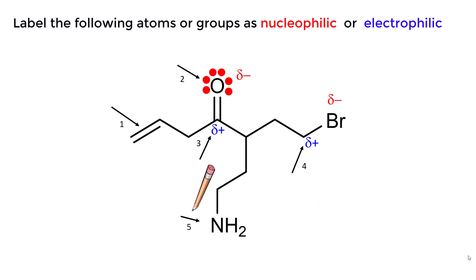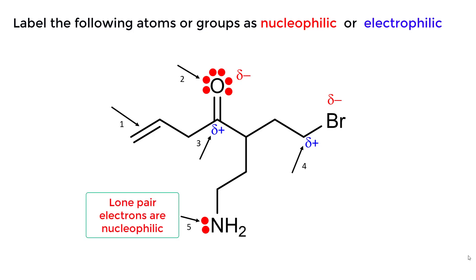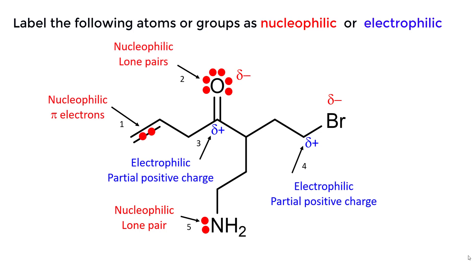The fifth arrow is pointing at the nitrogen atom. Nitrogen has a pair of electrons to donate to an electrophile and is therefore nucleophilic.